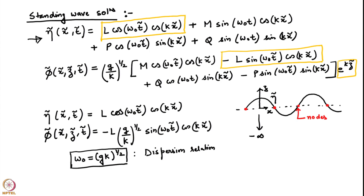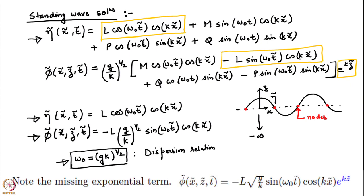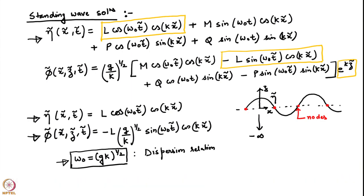We had also looked at one easy initial condition where the interface was deformed as a cosine wave: eta of x, 0 was just cos(kx̃). We found that the solution was very simple in time. The dimensional version of the solution is that eta is just a cosine wave in space oscillating harmonically in time with a frequency given by the dispersion relation. For these initial conditions, M, P and Q turned out to be 0, leaving only the two terms indicated in yellow boxes.